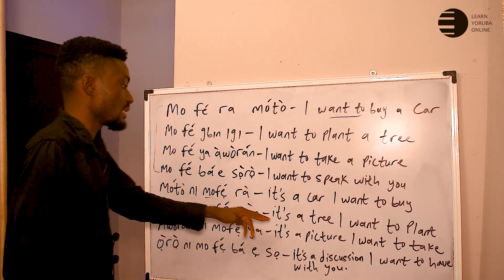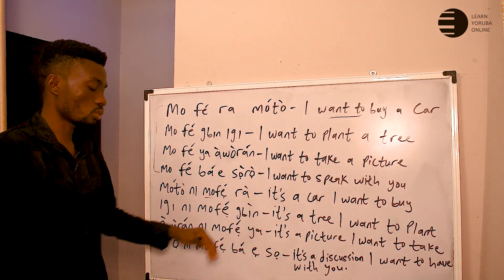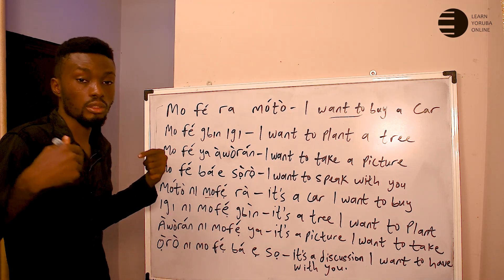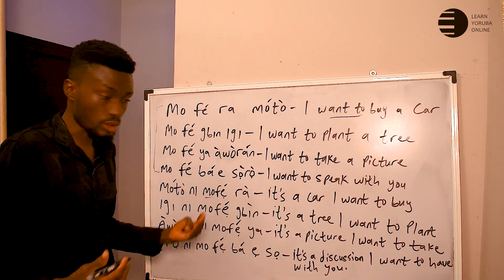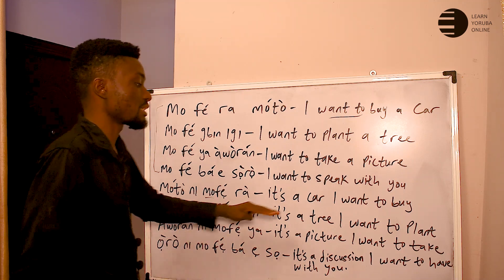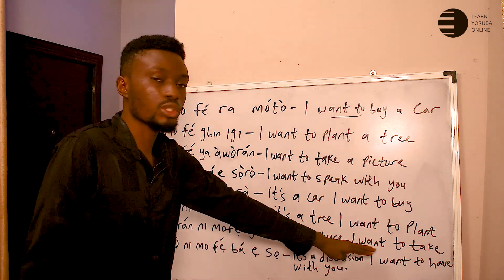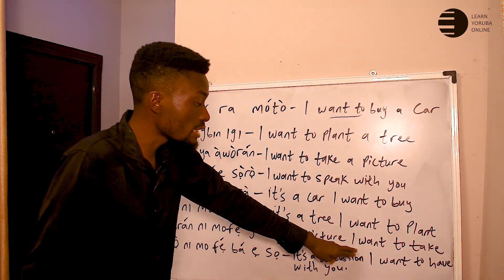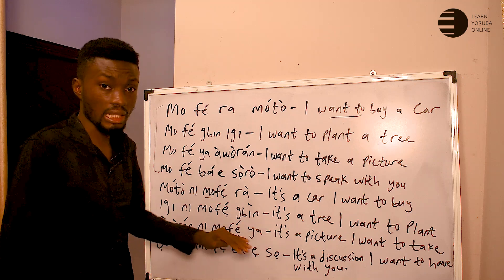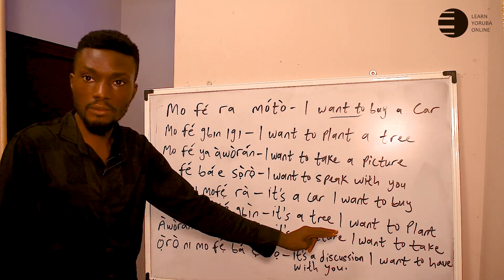Turning the tree sentence around: 'it's a tree I want to plant' is 'igi ni mofe be.' The noun comes first, then 'ni,' then your pronoun and 'fẹ,' and the verb comes last. For the picture: 'it's a picture I want to take' — 'I won't name mofe ya.' If you are in a group, 'it's a picture we want to take' is 'I won't name a fẹya.' If it is 'it's a picture they want to take,' it should use 'wọn' instead.